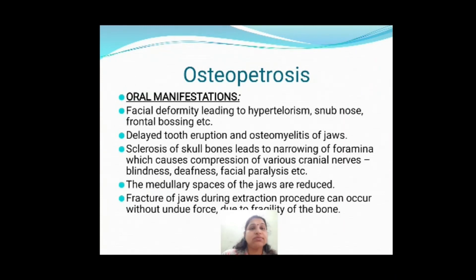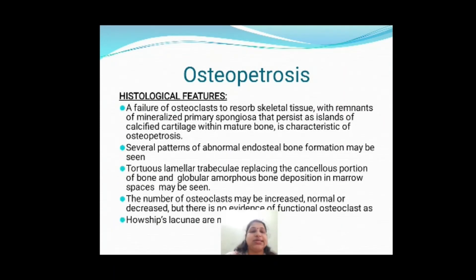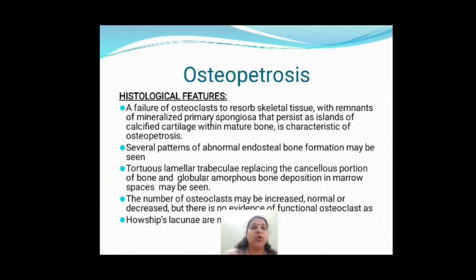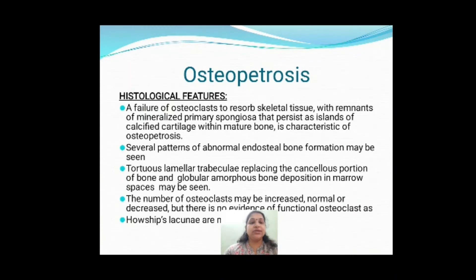Oral manifestations include delayed tooth eruption, osteomyelitis, and facial deformities like hypertelorism and frontal bossing. Histologically, there is failure of osteoclasts to resorb skeletal tissue, so remnants of mineralized primary spongiosa — cancellous bone — will be seen, along with islands of calcified cartilage with mature bone. Essentially histologically there will be more and more mature bone with no resorption of skeletal tissue.